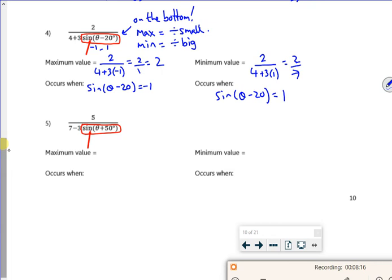So for this, I want it as small as I can be, but because of the minus, I want the 1 to be a positive and not a negative. So that would give me 5 over 4. And that's when sine of theta plus 50 is equal to 1.